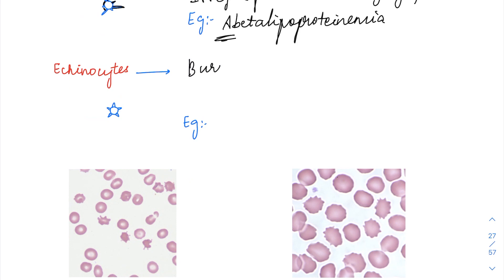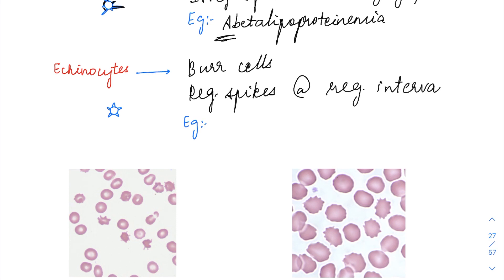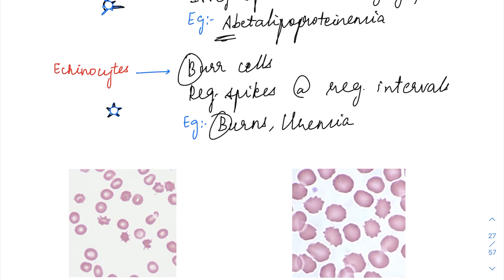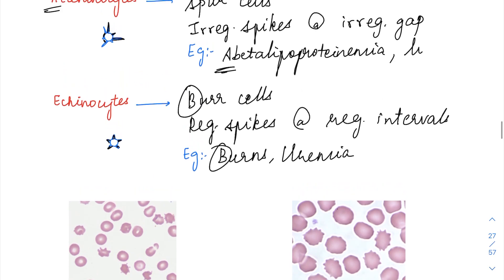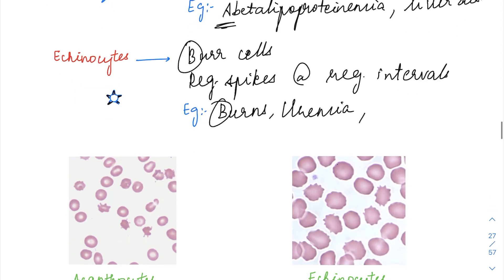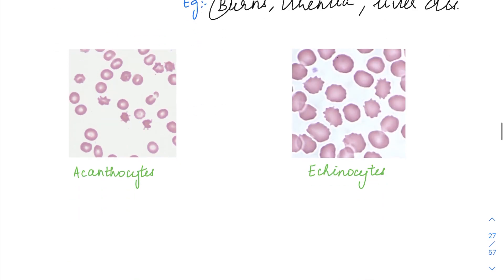Echinocytes are called burr cells and have regular spikes at regular intervals — small regular spikes at regular distance. Examples include burns and uremia. Both acanthocytes and echinocytes can also be seen in any kind of liver disease.